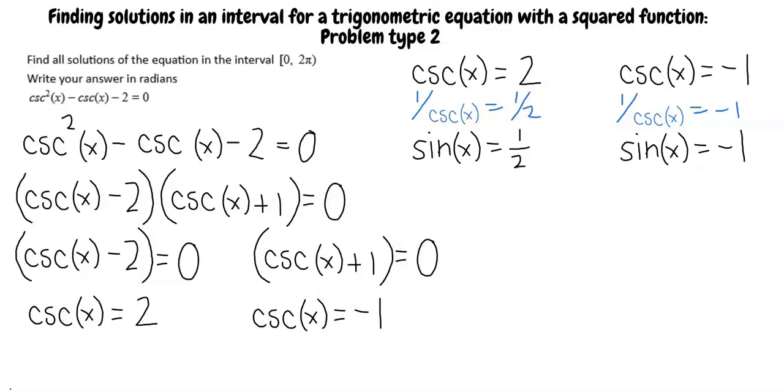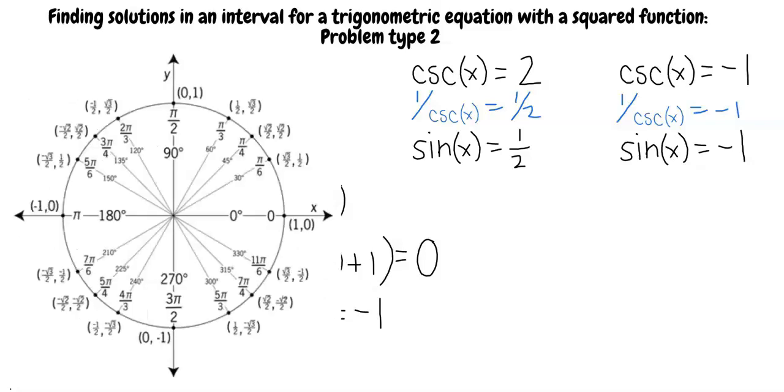So, we can rewrite these equations as sine of x equals 1 half and sine of x equals negative 1. Now, we need to find what angle on the unit circle causes the sine to be equal to 1 half. Can you explain how to finish the part where sine of x equals 1 half? I think I can!